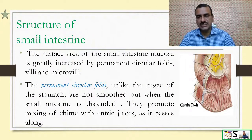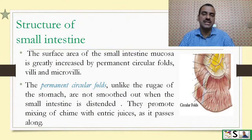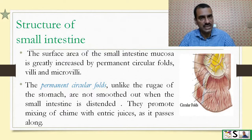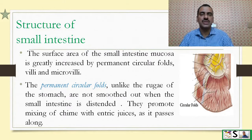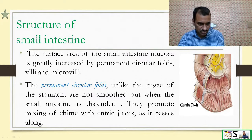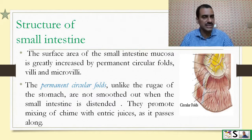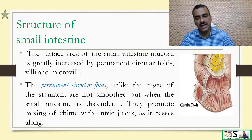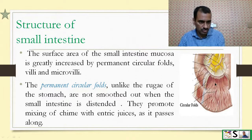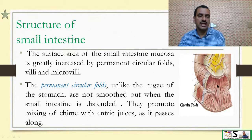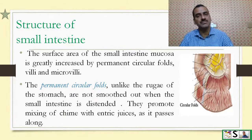The surface area of the small intestine — the mucosa — is greatly increased by permanent circular folds, villi, and microvilli. These circular folds are permanent; unlike the stomach, they are not smoothed out when full. They promote mixing of chyme with intestinal juices as it passes along, allowing thorough mixing as the chyme moves through the small intestine.